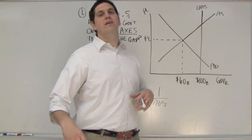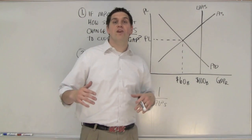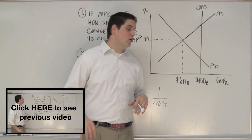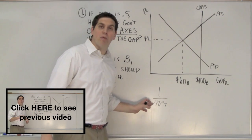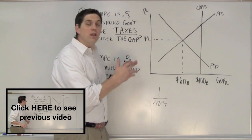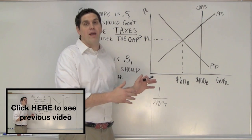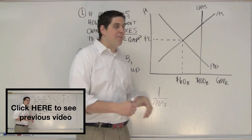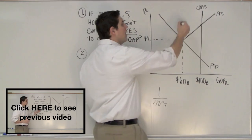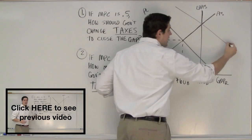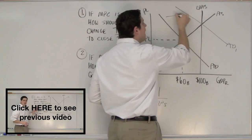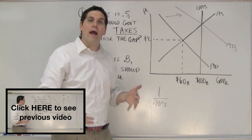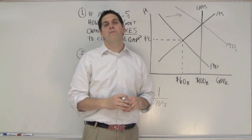Hey, how you doing AP econ students? This is Mr. Clifford. If you just watched the last video, you know we used the spending multiplier to figure out how to close a recessionary gap. The gap was a $40 billion gap. We showed you how you could increase government spending, shifting aggregate demand to close the gap, and you practiced calculating and using the multiplier.